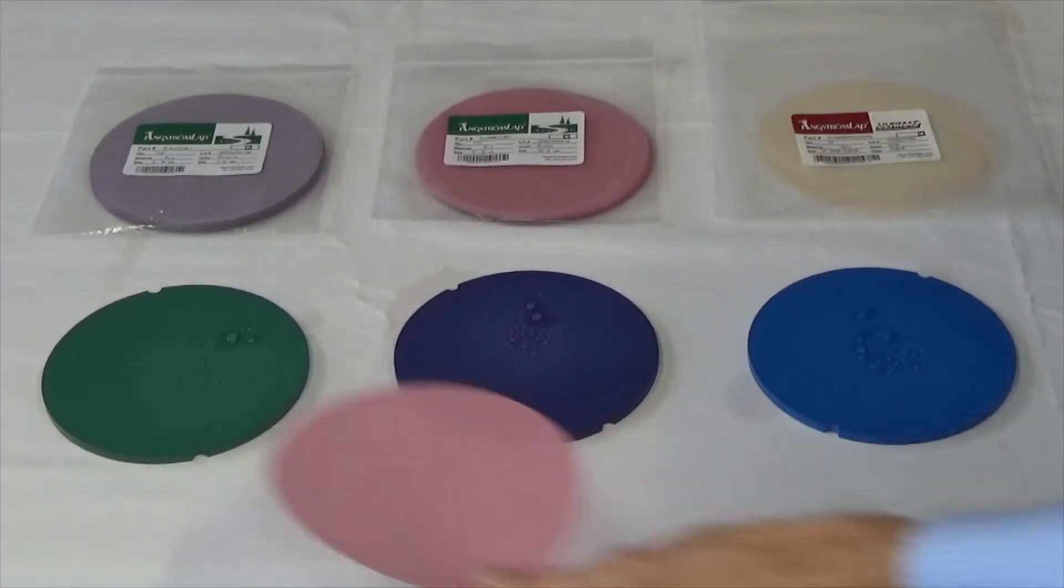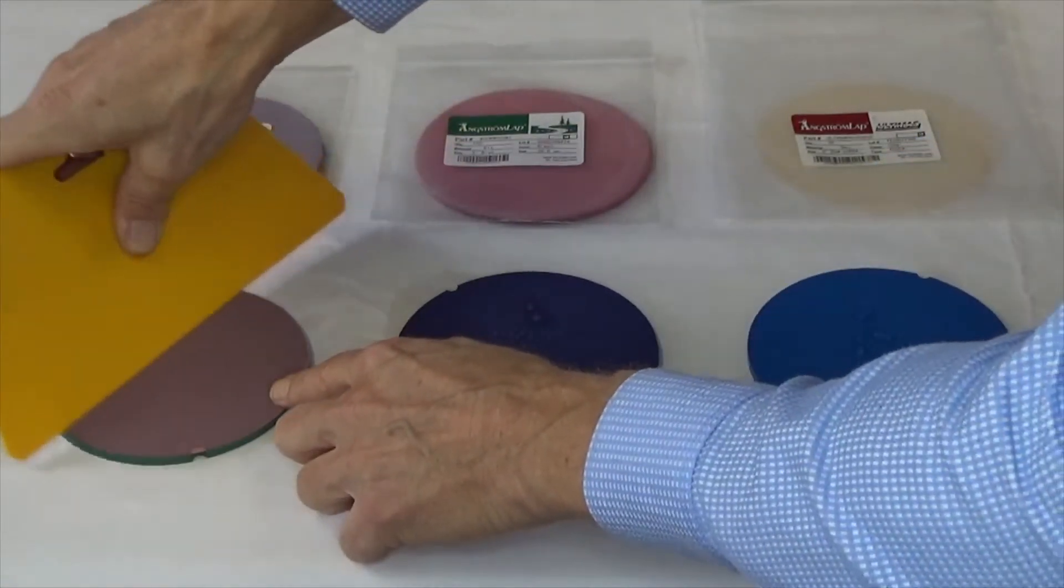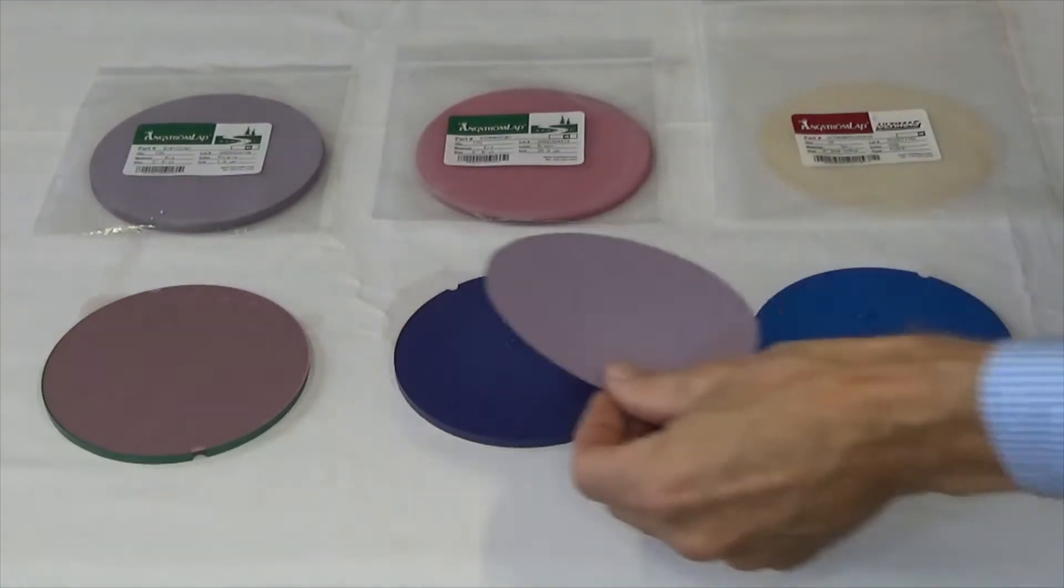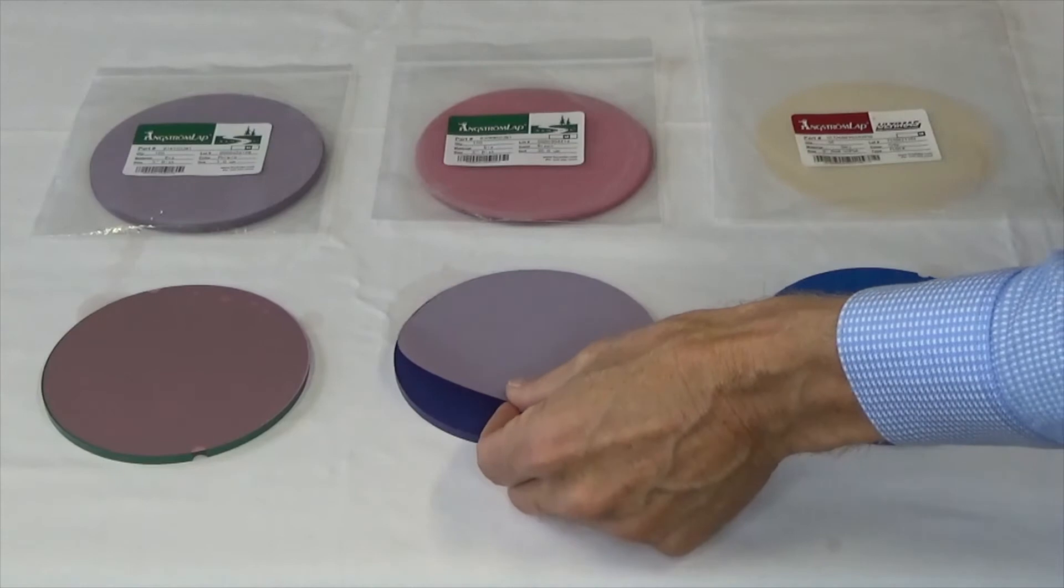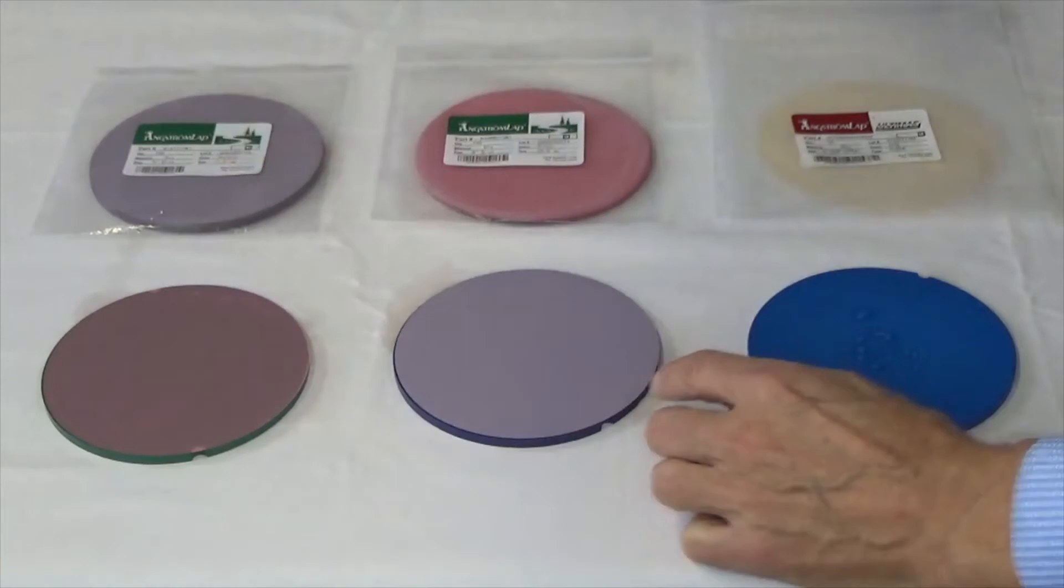To optimize your time and maximize capacity, prepare the remaining films on each of their own rubber pads. Do this while the machine performs the initial polish. Once these film rubber pad sets are prepared, you simply clean and exchange them between each polishing step.